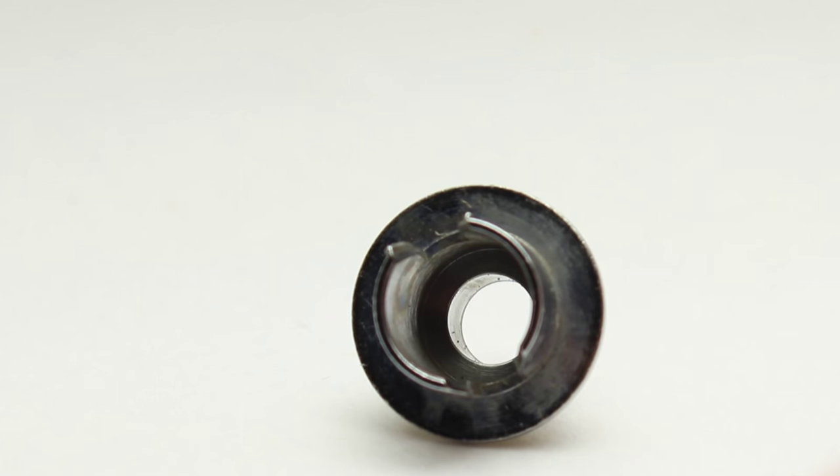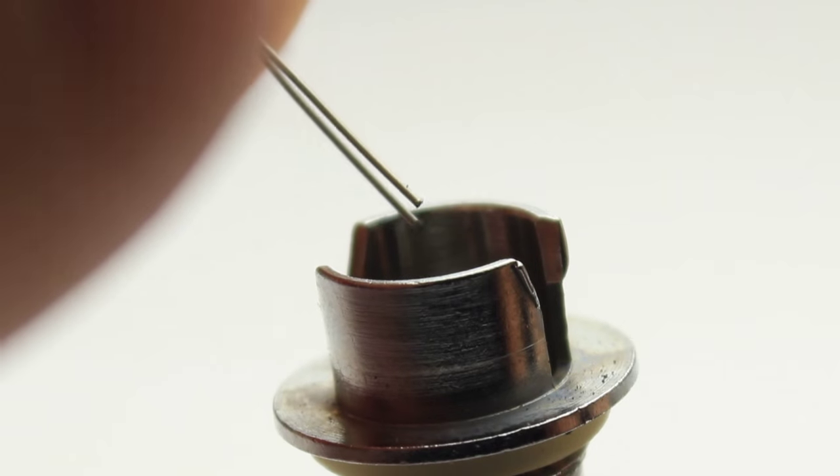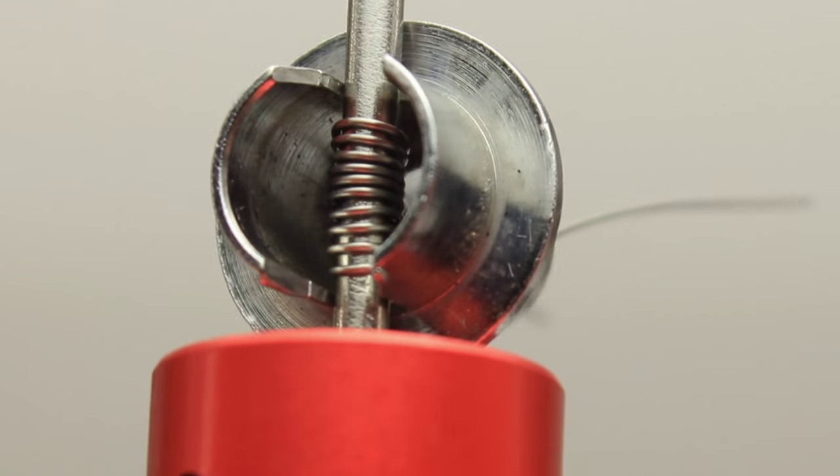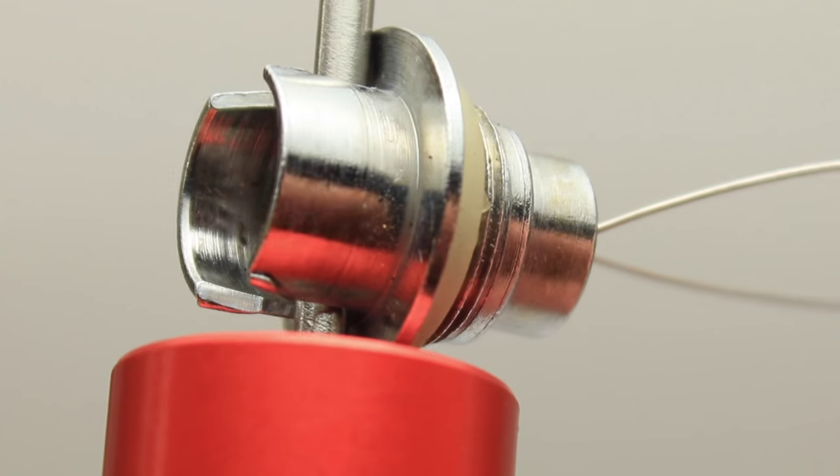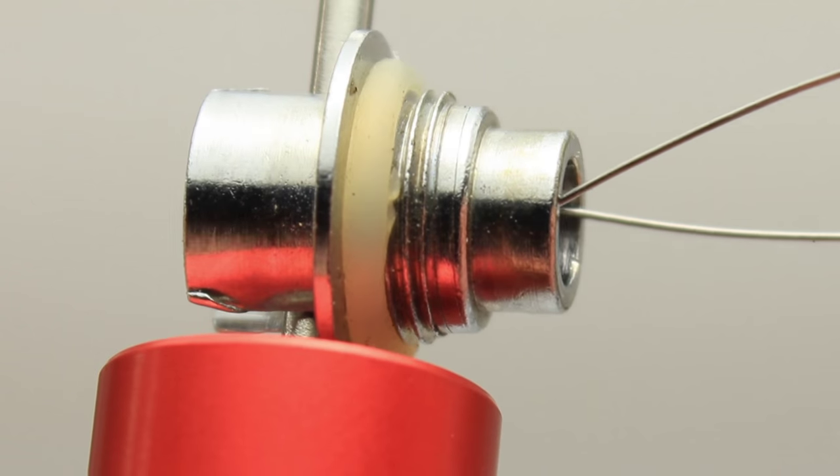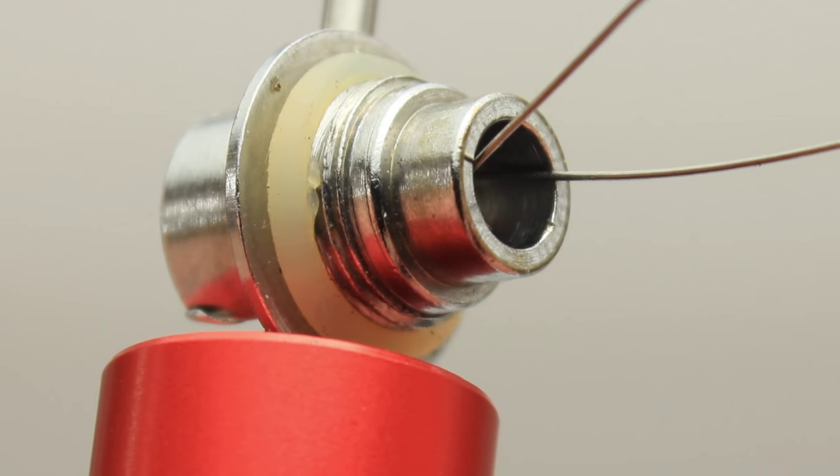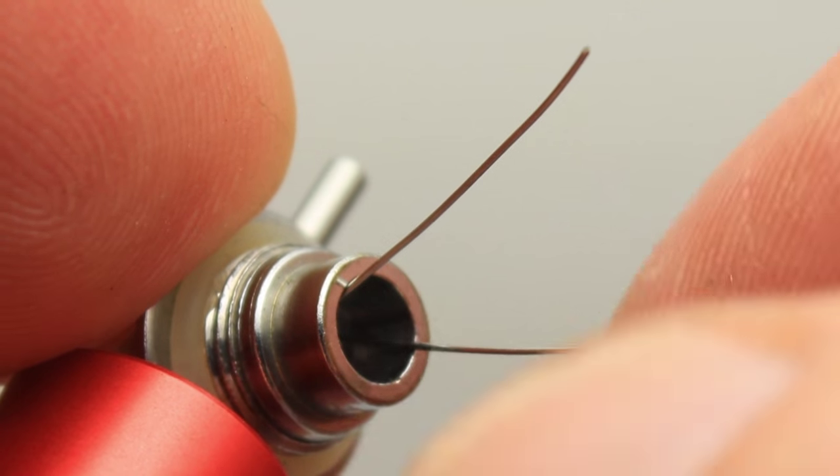Once cleaned, insert the two wire leads from the new coil through the casing. Bend one wire over the lip.